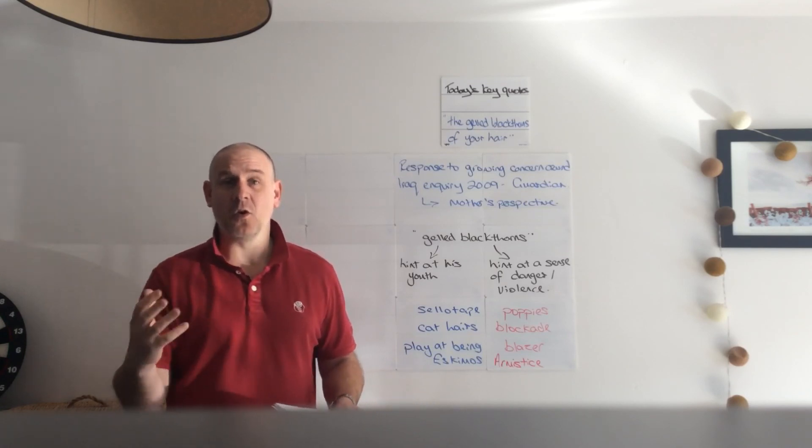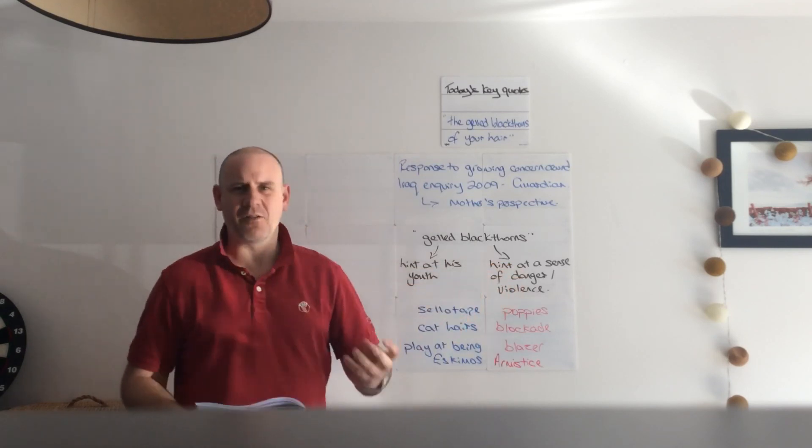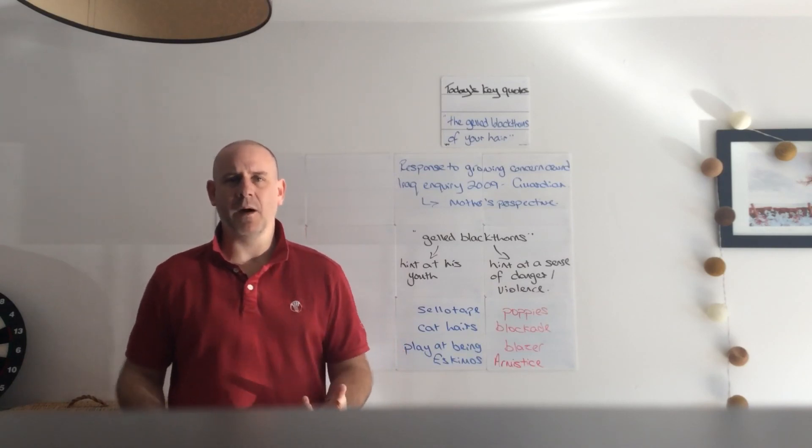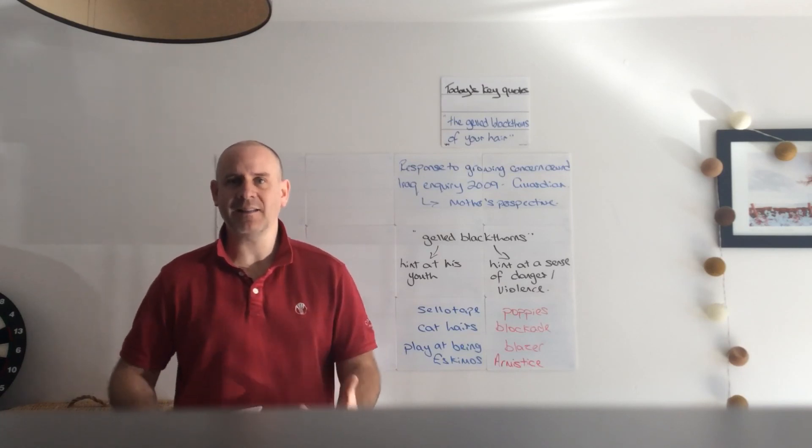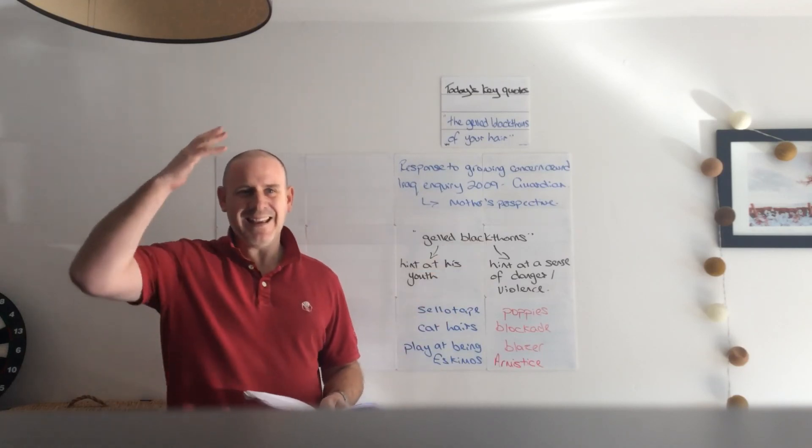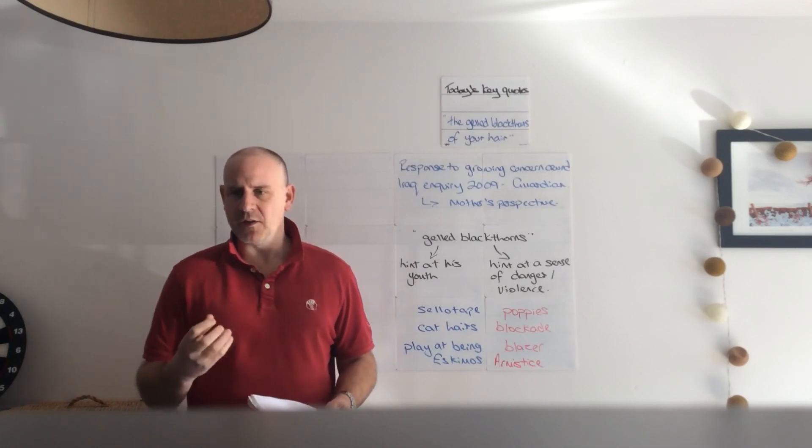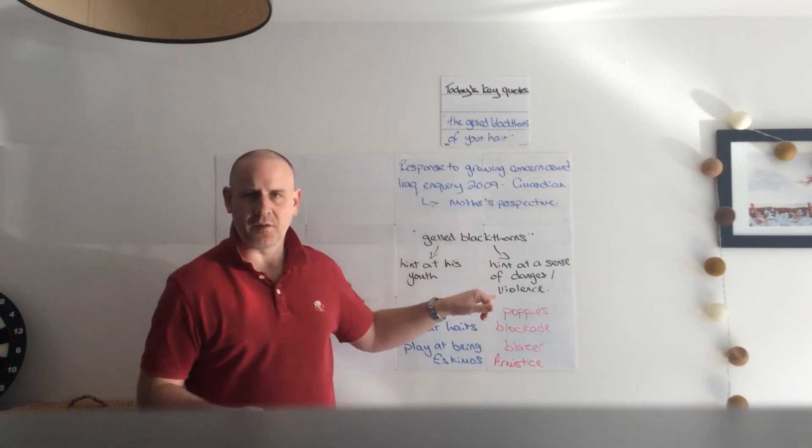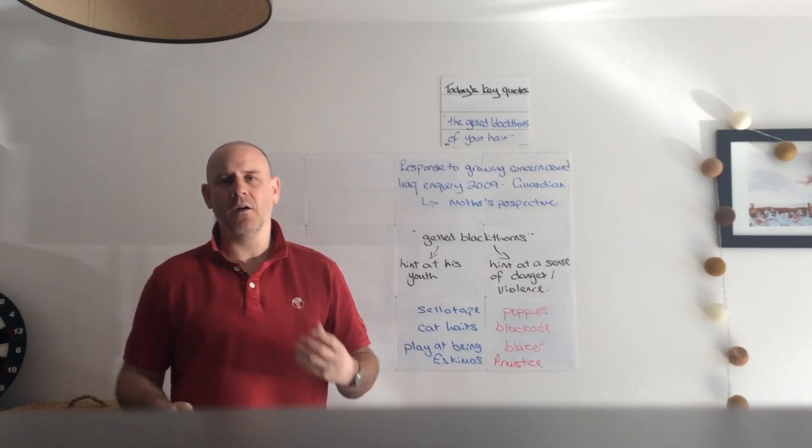In a number of different ways, both the danger and violence that the son is putting himself into by going off to war, but also in a way that's reminiscent slightly of Bayonet Charge, the son himself has to become violent, has to become dangerous in order to succeed and survive in the armed forces. So it suggests that his hair is sharp, reflecting metaphorically the toughness of the soldier, the toughness of his persona as he goes off to war. So really interesting collocation there with lots of metaphorical readings: the gelled black thorns, the youth, but also the hardness of being the soldier.